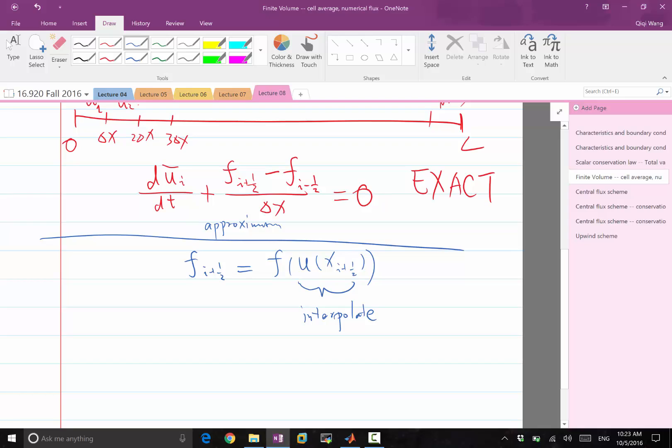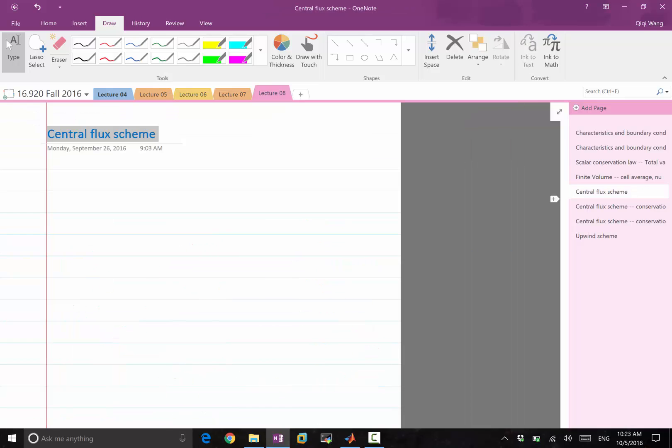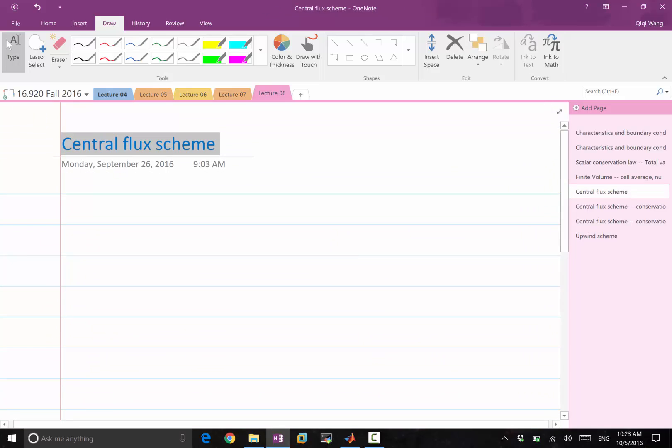So there are two types of interpolations. One type is to interpolate the u, the solution, and apply the flux on top of the interpolated solution. The other way is to compute the flux directly on the cell averages, and then interpolate the flux. So either way is a perfectly fine finite volume approximation. For example, I'm just going to give a very elementary example that we call the central flux scheme.